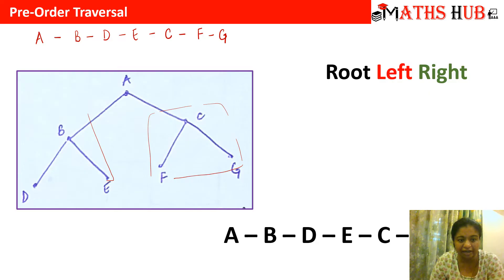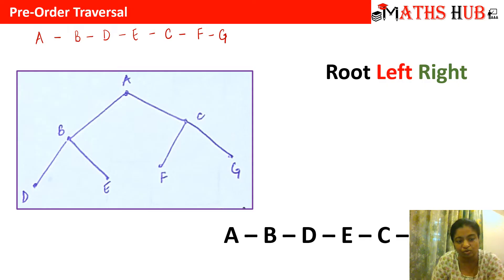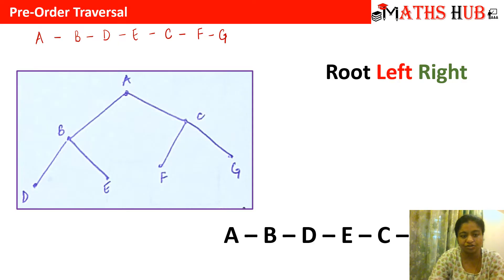Every time you write a pre-order traversal, after the root vertex, check who is your left subtree. In that left subtree, identify who is the root vertex, who is the left vertex, and who is the right vertex. We always follow the direction: root, then left, then right. Let's do some more examples to make it very clear how we write the pre-order traversal.